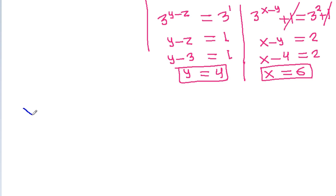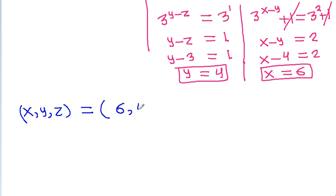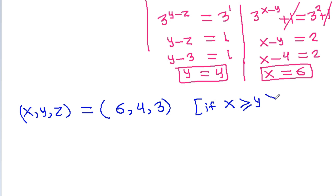So we get x, y, g equal to x is 6, y is 4, and g is 3, given x greater than or equal to y greater than or equal to g.